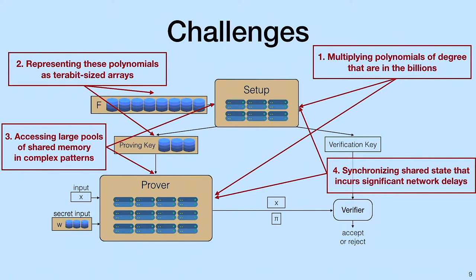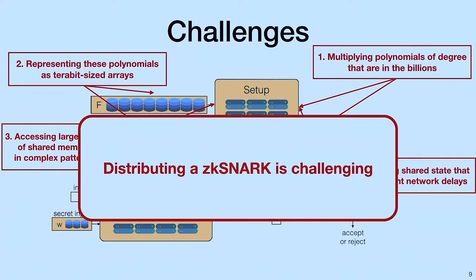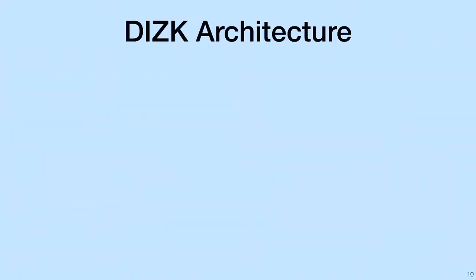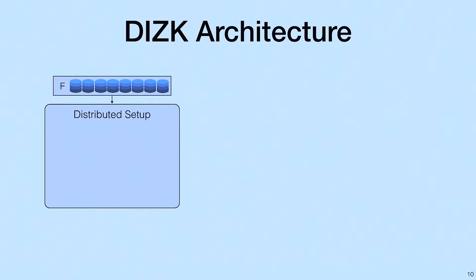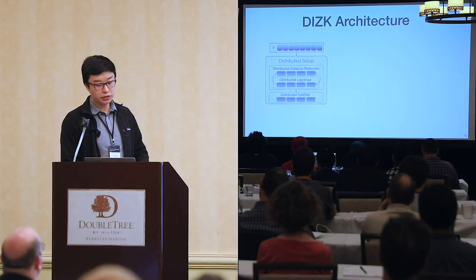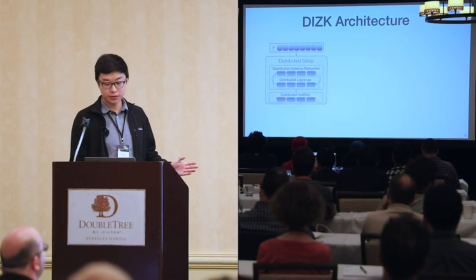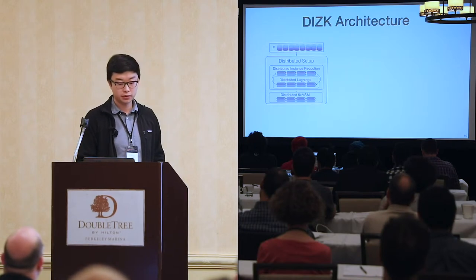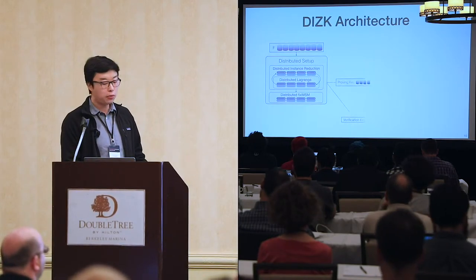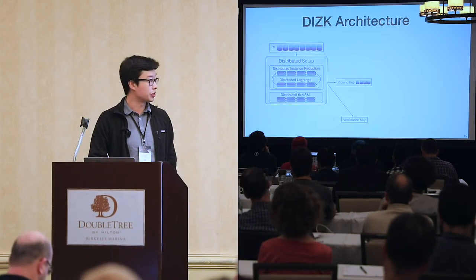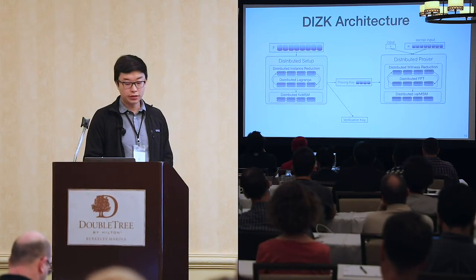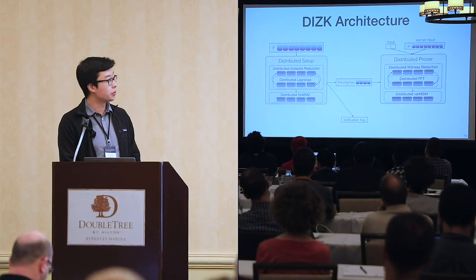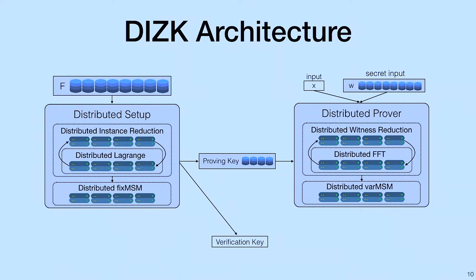These are fundamental challenges that we need to overcome. We do so in the following way. It turns out it's not enough to keep the sub-components of this setup monolithic. We distribute the setup by implementing distributed algorithms for each of these sub-components. This distributed setup will now output a distributed proving key and a small verification key. Just as before, we also distribute the prover by distributing the monolithic sub-components within it. And lastly, the verifier will check that the proof is valid. We forego distributing this step as it is extremely cheap to run.